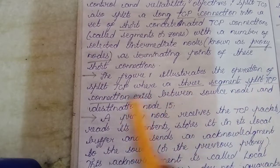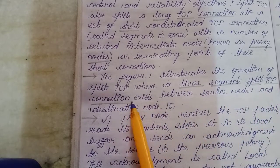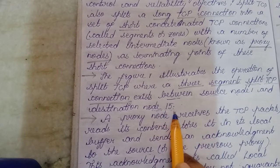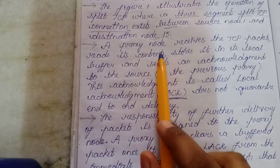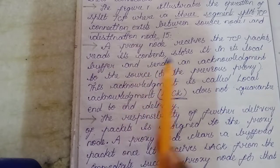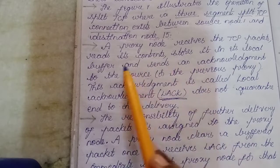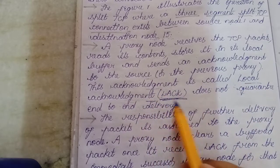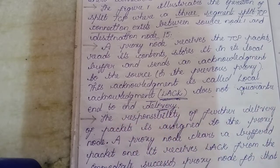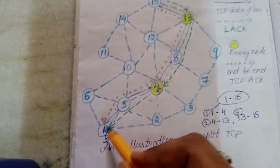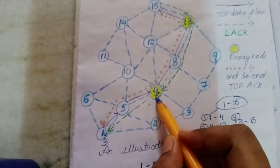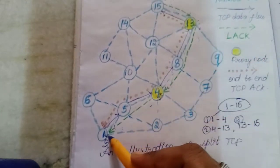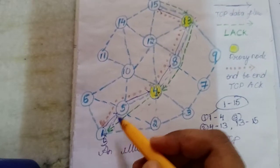The figure illustrates the operation of Split TCP where a three-segment Split TCP connection exists between source node 1 and destination node 15. A proxy node receives the TCP packets, reads its contents, stores it in its local buffer, and sends an acknowledgement to the source node. This acknowledgement is called a local acknowledgement or LAC, and does not guarantee end-to-end delivery. For example, if the source node sends a data packet to node 4, node 4 reads the content, stores it in memory, and sends a LAC to the source node.